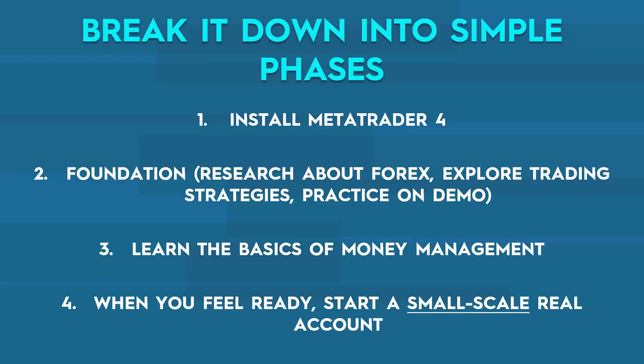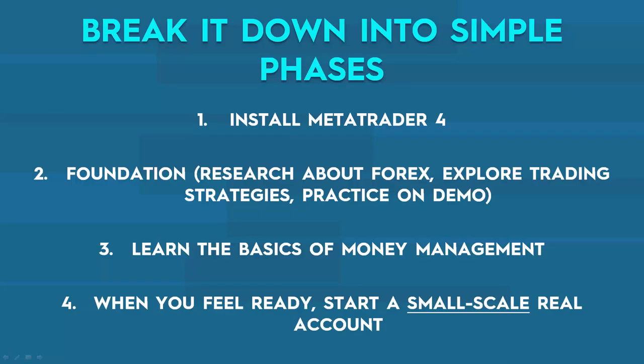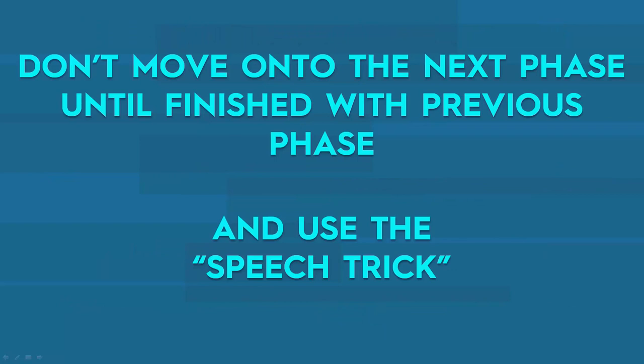Once you've experienced that, you understand how you feel about your trades, learn to control your feelings, and then you can start trading a bigger account. The rule is: don't move on to the next phase until you're finished with the previous one. So: install MetaTrader 4, learn the foundations of trading and practice, be social, keep a trading log or journal, then learn the basics of money management, then move on to a small-scale real account. Don't move on to the next step unless you're finished with the previous one.